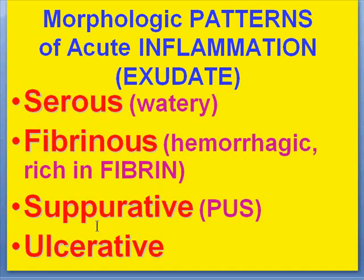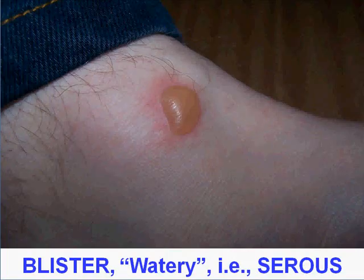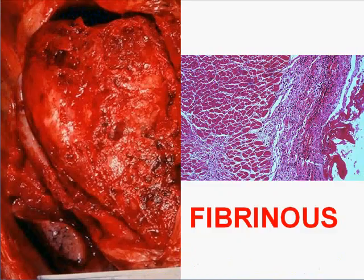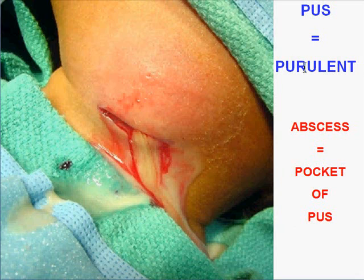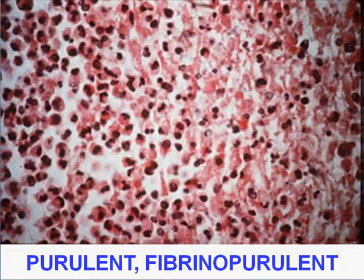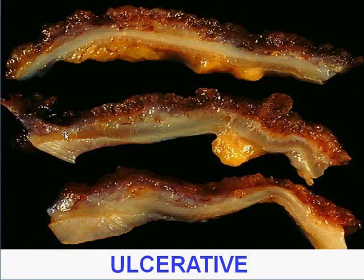That's serous — that's water inside of a blister. The chief exudate there is plain old water. For a fibrinous example, consider pericarditis: all that red material coating the pericardium is fibrin, with a bunch of neutrophils underneath. The third pattern is purulent or pus — an abscess is no more than a pocket of pus, essentially neutrophils and a little fibrin. The fourth pattern is ulcerative: ulcerations can be secondary to acute inflammation, or the breakage of the mucosa can cause the acute inflammation.